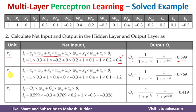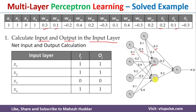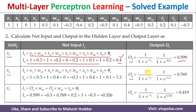Similarly, the net input at x6 is: x1·W16 + x2·W26 + x3·W36 + x4·W46 + x0·theta6. Putting in the values, the net input at x6 is 1.2. The output O6 = 1 / (1 + e^(−1.2)) = 0.769. Similarly, we calculate the net input at x7, the output layer neuron. The output at the output layer neuron is 0.419.